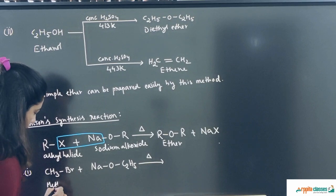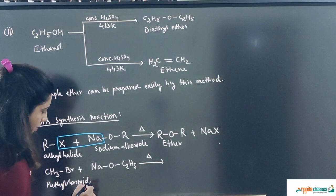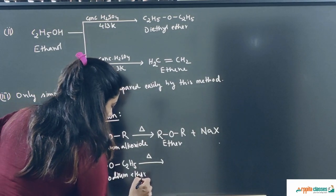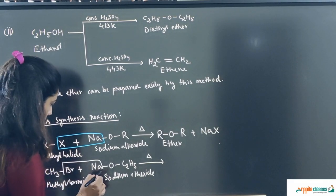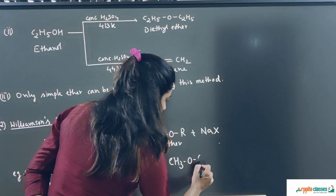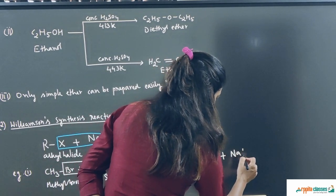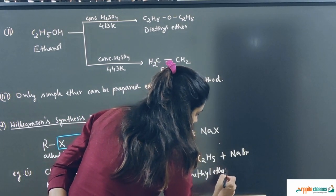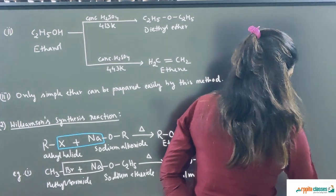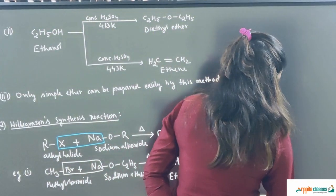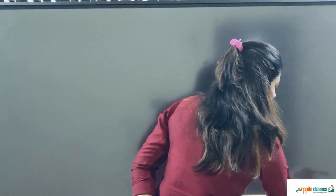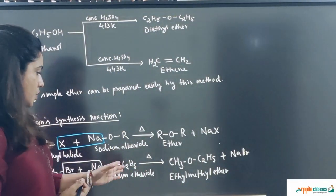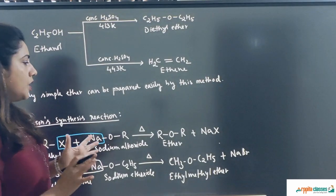For example, methyl bromide (CH₃Br) is treated with sodium ethoxide (C₂H₅ONa). NaBr comes out as the byproduct and the remaining parts join to give CH₃OC₂H₅, which is ethyl methyl ether. In this reaction, it is important to remember that the substrate must be a primary alkyl halide. If it is a secondary halide, sodium alkoxide acts as a base and we get an alkene instead of an ether.